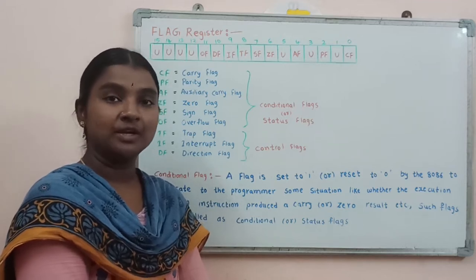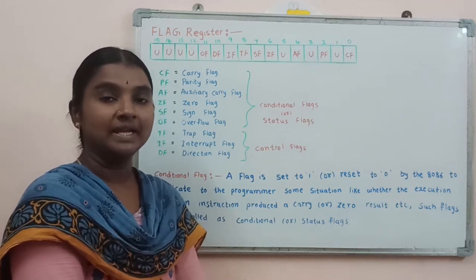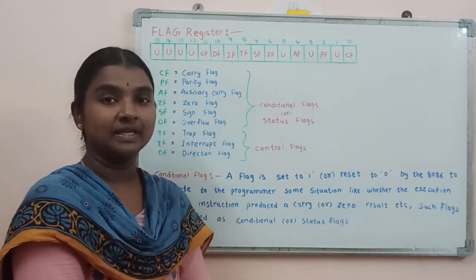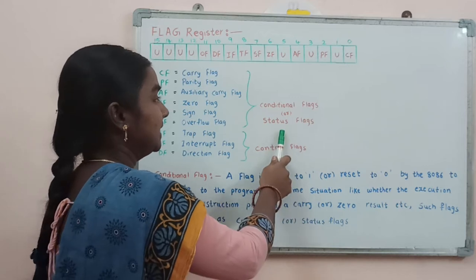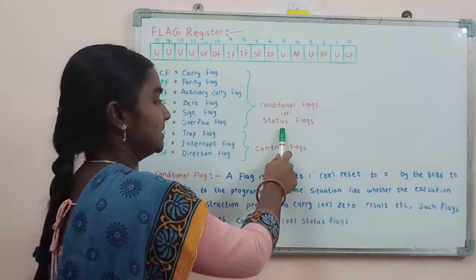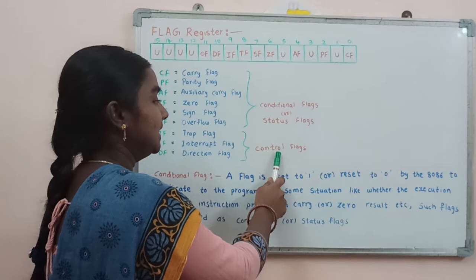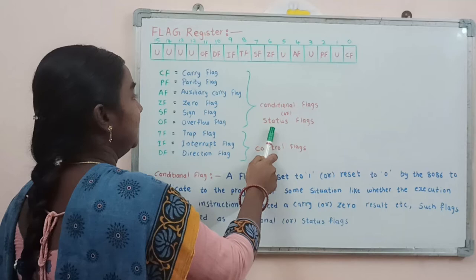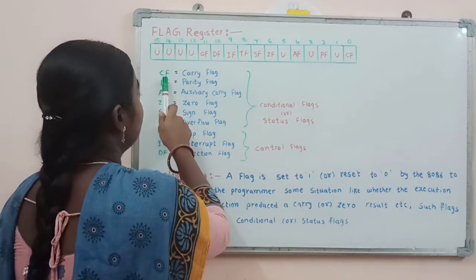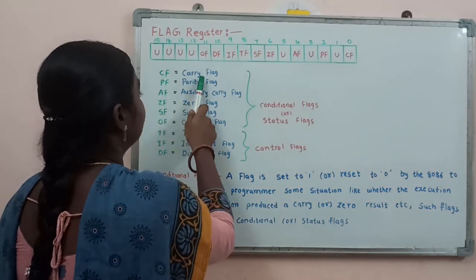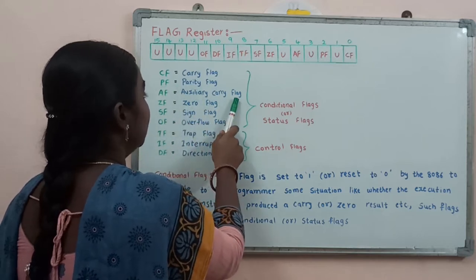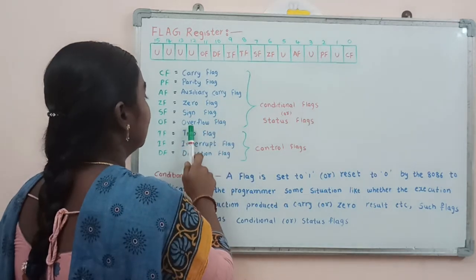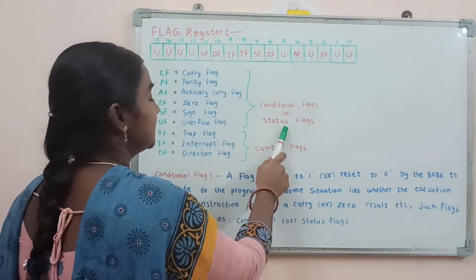In this flag register we are going to learn only the 9 active flags. These 9 active flags are divided into 2 categories. The first category is conditional flags or status flags, and the second category is control flags. The conditional flags are: carry flag, parity flag, auxiliary carry flag, zero flag, sign flag, and overflow flag.